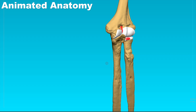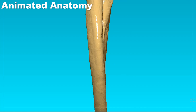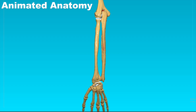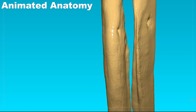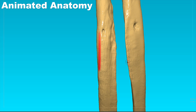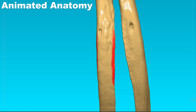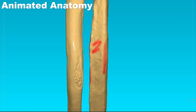Let's stick to the ulna. Looking at the body of the ulna we can see the borders. This would be the posterior border — if we look away, that's the posterior one. Then we have the anterior border, and we also have the interosseous border here. It's only natural that these borders create the anterior surface, the medial surface, and the posterior surface.